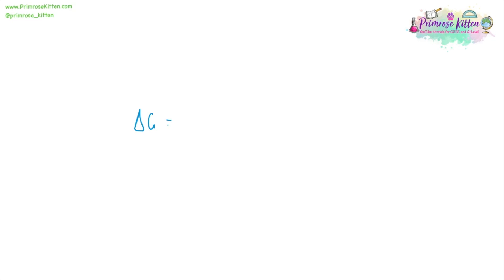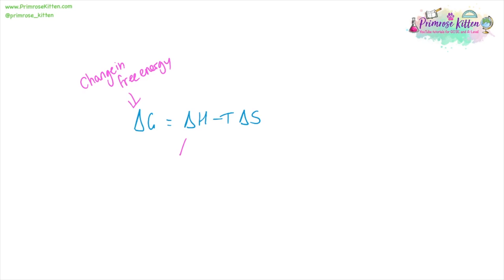For this, you need to know the equation: delta G is equal to delta H minus T delta S. Delta G is going to be our change in free energy, and this is the balance between the enthalpy, the entropy, and the temperature for any given process.